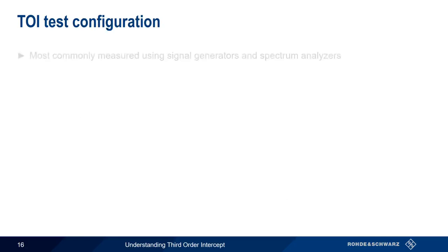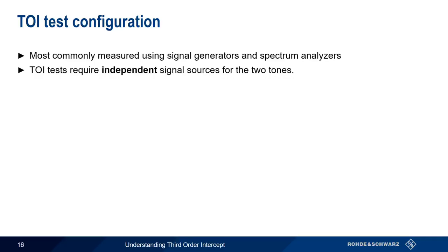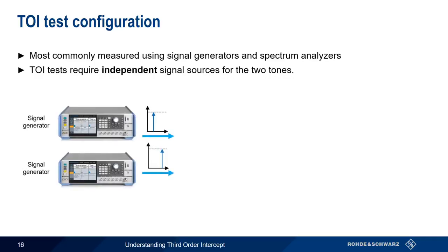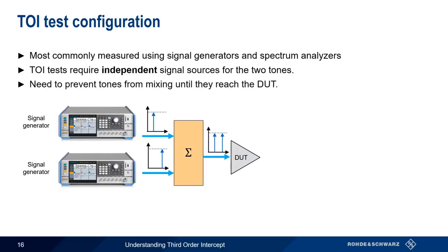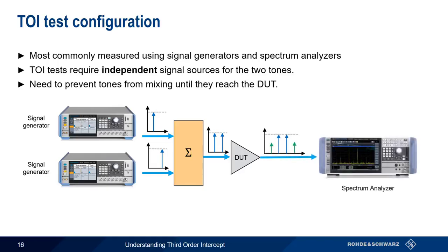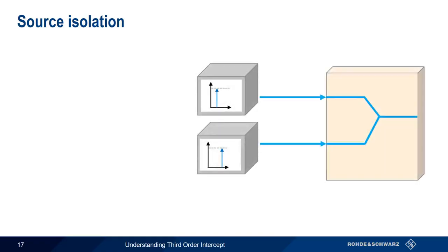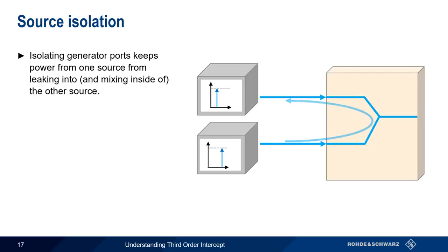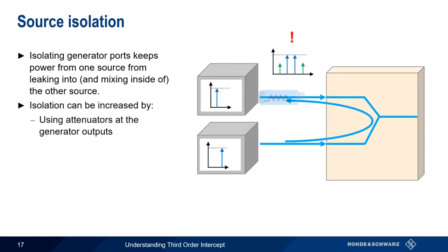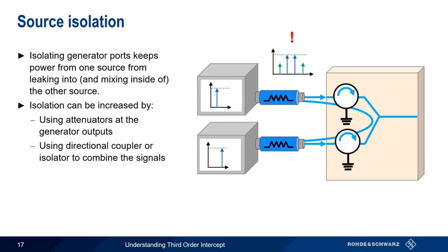The most common way of measuring third-order intercept is using signal generators and spectrum analyzers. It's easy to generate a two-tone signal using a single generator, but the proper test methodology for measuring third-order intercept requires two independent signal sources. We want to combine these two tones, but we also want to prevent them from mixing until they reach the device under test, right before they're measured using a spectrum analyzer. In addition to using separate instruments to generate the two tones, we also want to be sure that the output signals from one generator don't find their way into the input of the second generator, creating intermodulation. We can isolate the source signals by using attenuators at the generator inputs, and or by using a directional coupler, circulator, or isolator to combine the signals.